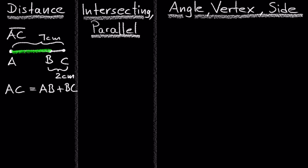So we write the equation for the distances between the points on the line segment, which is AC equals AB plus BC. Now we plug in what we have, which is AC equals 7, and BC equals 2.